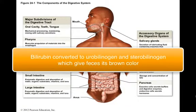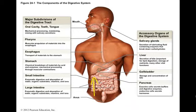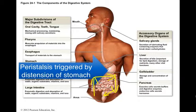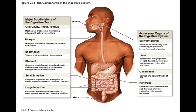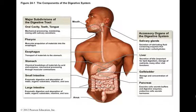In the colon, bilirubin is converted to urobilinogen and stercobilinogens. Some urobilinogen is absorbed into the bloodstream and excreted in urine, but the majority of urobilinogens and stercobilinogens are excreted in feces, giving it a yellow-brown or brown color. Powerful peristaltic contractions move material along the colon toward the rectum, occurring a few times a day triggered by distention of the stomach. These contractions force feces into the usually empty rectum, triggering the conscious urge to defecate — a reflex initiated by stretch receptors in the stomach. Babies eat, their stomach gets distended, and they have a bowel movement.